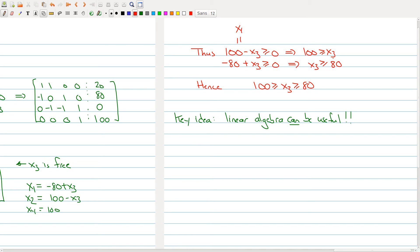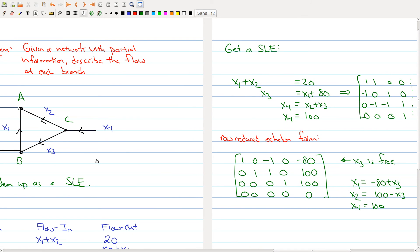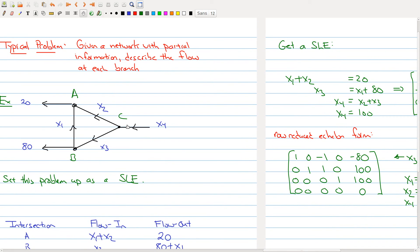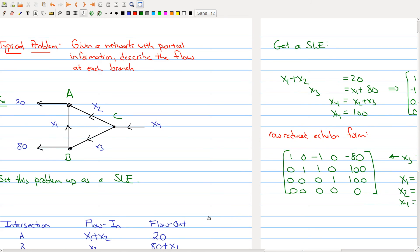And then this guy right here was equal to x2, and that also has to be greater than or equal to zero. But that gives me a constraint of x3 is equal to 80. So if I take any x3 between 100 and 80, I will get a valid solution to my network problem where I won't get any negative numbers. I won't have things going in the wrong direction in terms of my network.